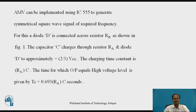A diode D is connected across resistor Rb as shown in figure 1. The capacitor C charges through resistor RA and diode D to approximately two-third VCC. The charging time constant is RA times C, so resistor Rb is completely bypassed due to diode D. When the capacitor charges, the diode conducts and Rb is bypassed. The time for which the output equals high is given by Tc = 0.693 × RA × C seconds, where Tc is the capacitor charging time.